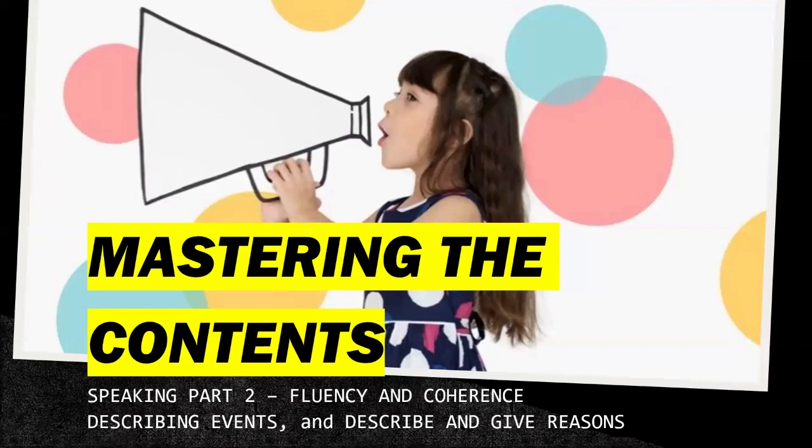In the previous session we learned that IELTS Speaking Part 2 fluency and coherence includes questions that ask you to describe steps and how to do something, and questions that ask you to describe the sequence of events or stages in a story. Today we study the third and fourth types. Type three is to describe events — different from types one and two. Type four is to describe and give reasons — for example, describing places, things, or people and giving reasons.